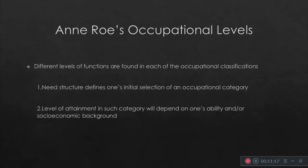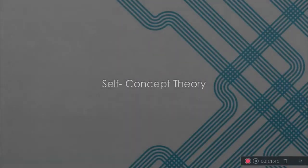So different levels of functions are found in each of the occupational classifications. The need structure defines one's initial selection of an occupational category; the level of attainment in such category will depend on one's ability and/or socioeconomic background.